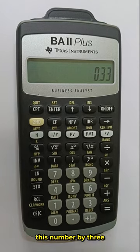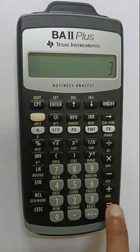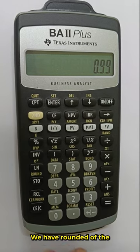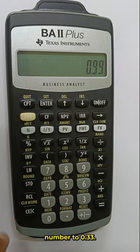Now if we multiply this number by 3, instead of 1 we will get 0.99 because we don't have a recurring number anymore. We have rounded off the number to 0.33.